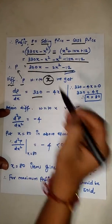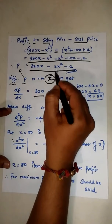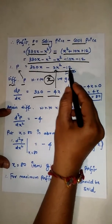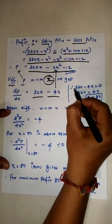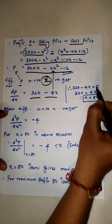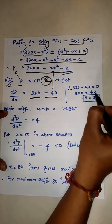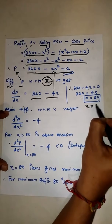Now differentiate P with respect to x. We get dP/dx equals 320 minus 4x. The constant term gives zero. Setting this equal to zero: 320 minus 4x equals 0, so 320 equals 4x, giving us x equals 80.